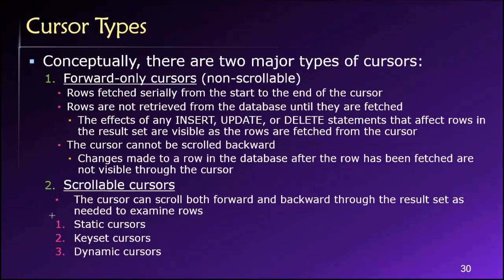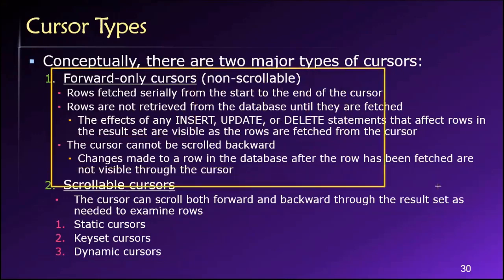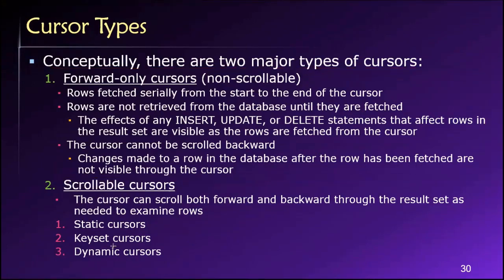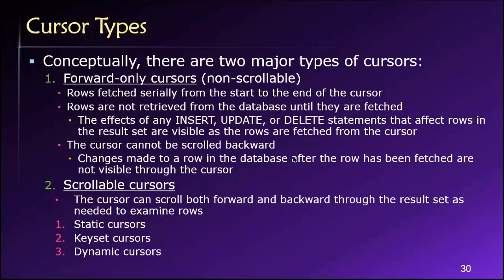These scrollable cursors come in three different types: static, keyset, and dynamic. The basic idea with each of these is whether — and how much — I can see changes that are made while I'm busy scrolling. That's the difference between these three types of scrollable cursors. Like with our forward-only cursor, we said that as we scroll, any changes made to rows we haven't seen yet, we'll get to see the most recent version of those rows once we finally get there. That's not always the case with scrollable cursors — what we get to see will depend on what type of scrollable cursor we use.